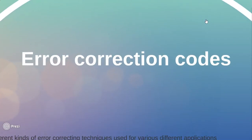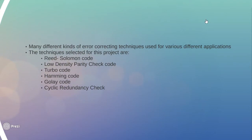There are many different kinds of error correcting codes. They come in a variety of different shapes and sizes suited for different applications. The error correcting codes selected for this project are Reed-Solomon codes, low density parity check code, turbo code, Hamming code, Golay code, and cyclic redundancy check code.